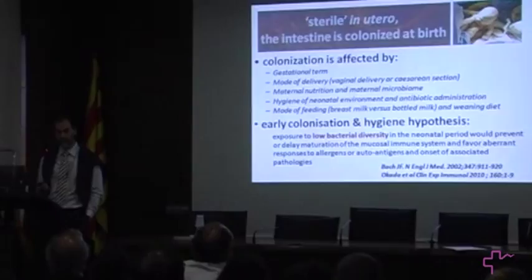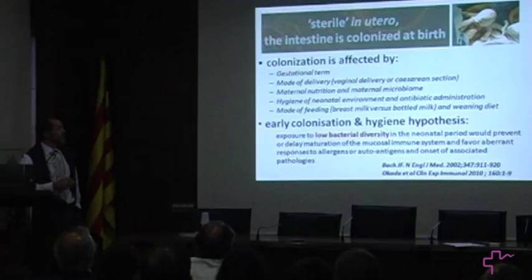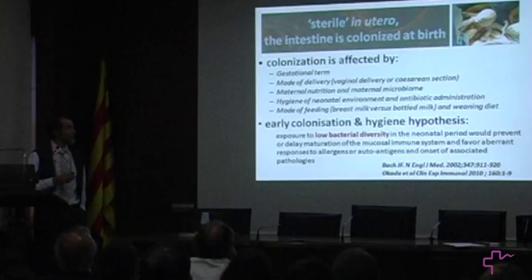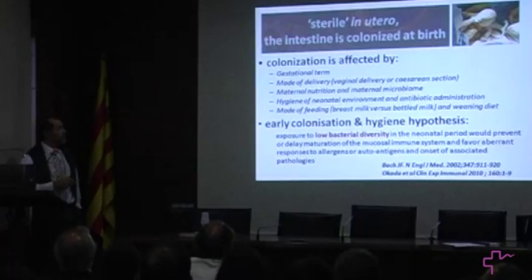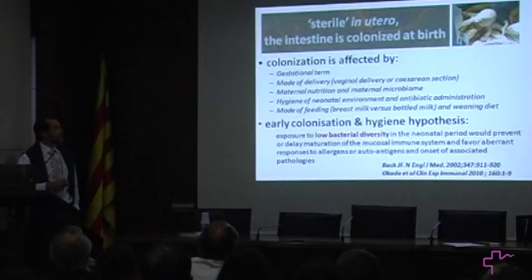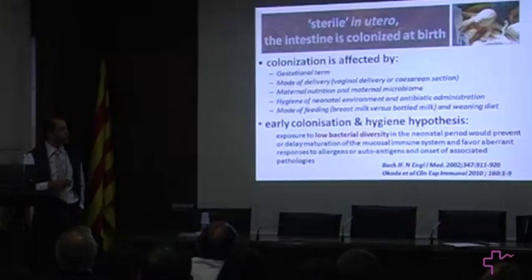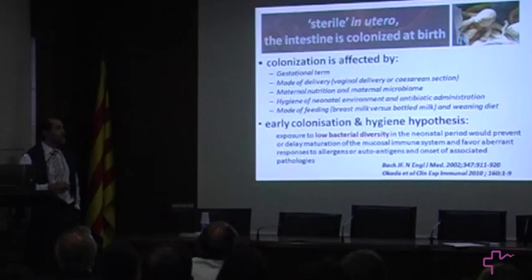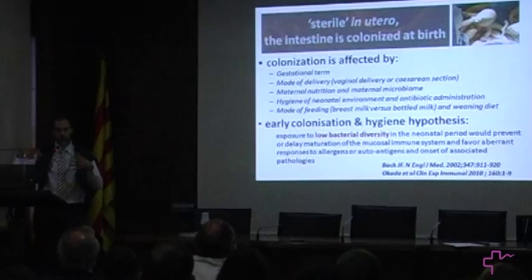When does the microbiota come into life? It comes from the very moment of birth. Many factors affect colonization at birth: gestational term, as preterm babies have a very simple microbiota; mode of delivery — vaginal versus caesarean section; maternal nutrition; maternal microbiomes from skin, vaginal, and intestinal sources; hygiene of the neonatal environment; antibiotic administration; and mode of feeding thereafter. Breastmilk versus bottle milk is well known, but weaning diet may also play a part at times when the microbiota is still evolving.